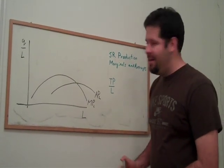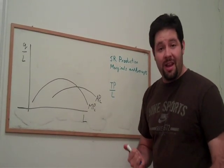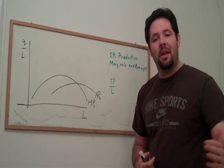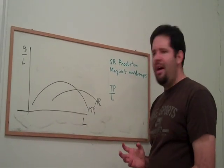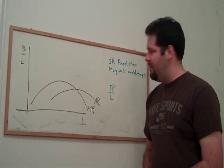Marginal product, on the other hand, is how much total product changed by just incrementing up labor just a little bit. So, why do these look the way that they do?